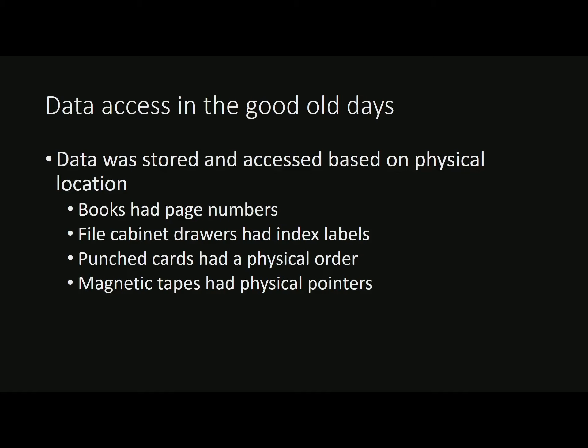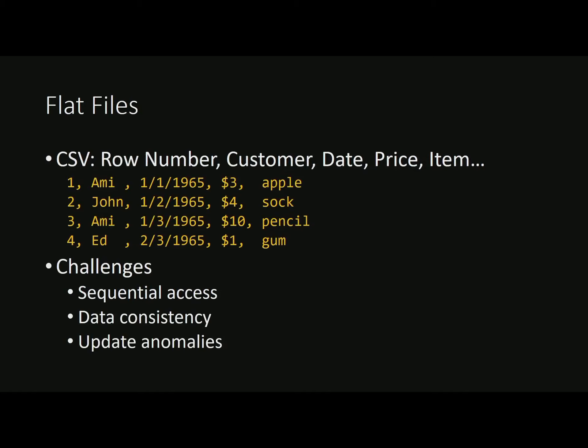Books had page numbers, which were physical locators to the page. Libraries had indexes which told you in which row, which column, which shelf your books were located — again, physical location. File cabinets and punched cards had a physical order. If you ever dropped a bunch of punched cards on the floor, you would feel the physical impact of that. Magnetic tapes had to wind and rewind until they got to a specific location, a specific address pointer. As long as data sizes were small and requirements weren't that high, things worked out pretty well.